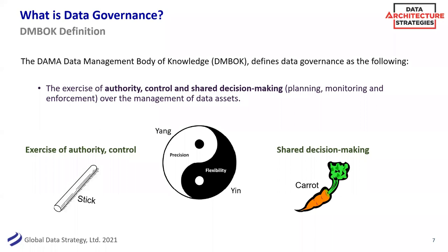What is data governance? I'm a data architect and data modeler, so I always like my definitions. I took this from the DAMA DMBOK — the Data Management Body of Knowledge. I like this definition because it really gets to the nuance: data governance is the exercise of authority, control, and shared decision-making. That shared decision-making is the yin and the yang — the carrot and the stick. You can't only be the stick, or you'll lose interest. You really have to have that carrot to make people interested. But you can't be all carrot without any policies or stick. It's a balance, and you need both to make it successful.